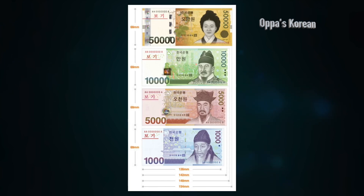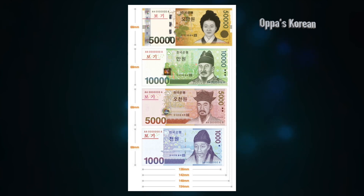The size of the bills gets larger as the value goes up. So the 50,000 won bill is the largest in size, and the 1,000 won bill is the smallest in size. Now let's take a look at each bill.